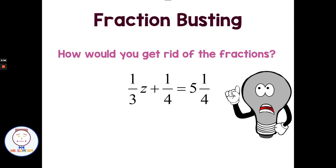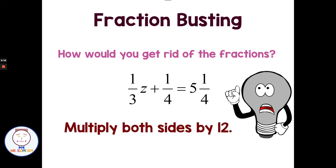What if I had a problem like this: one third z plus one fourth equals five fourths? I have denominators of three and four, so what can I multiply by to get rid of all the fractions? Multiply everything by twelve — multiply both sides by twelve — and you can clear all the fractions.